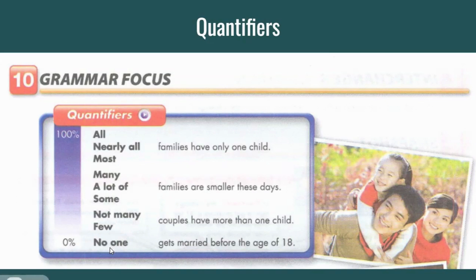So what do we mean when we say 'no one'? No one means zero percent. For example, no one gets married before the age of 18 — so it's zero percent I'm referring to.